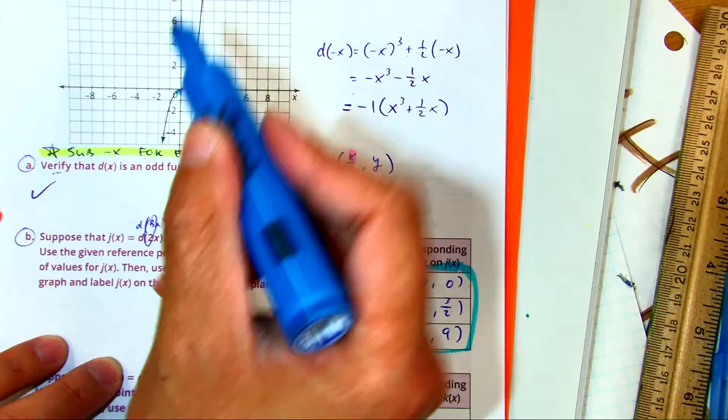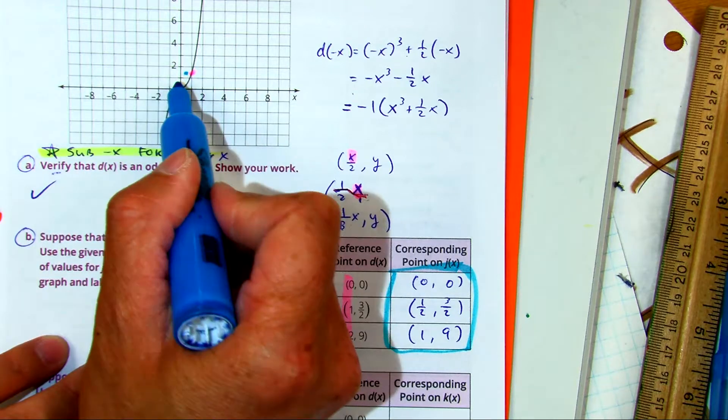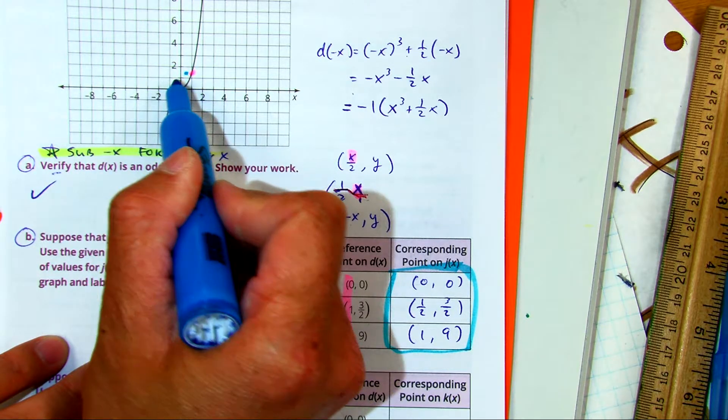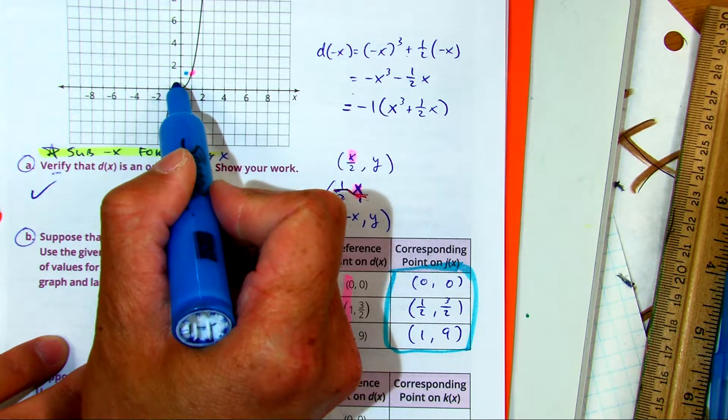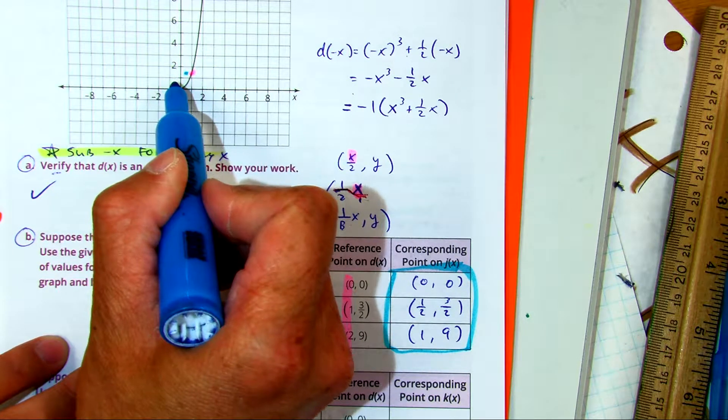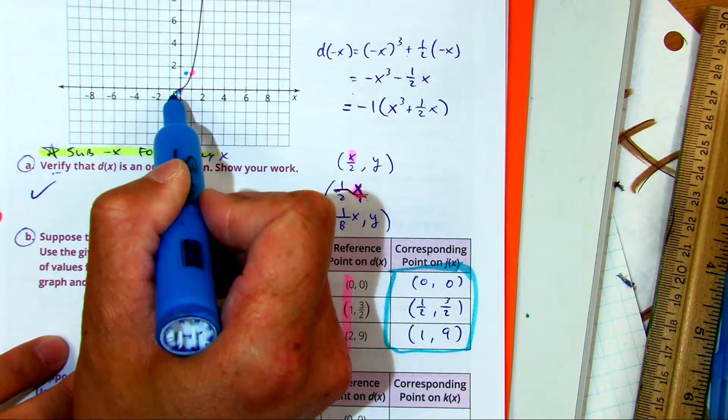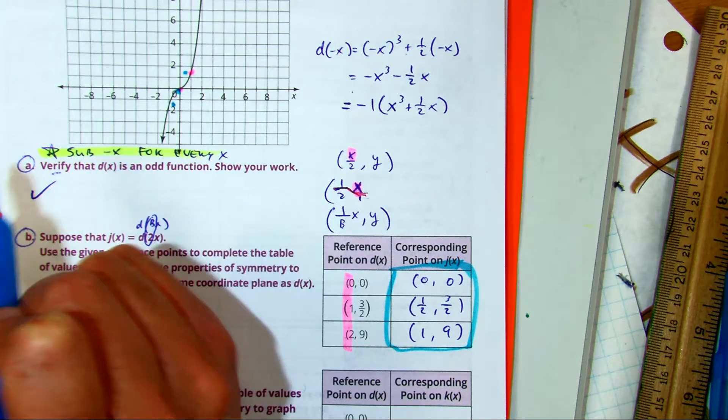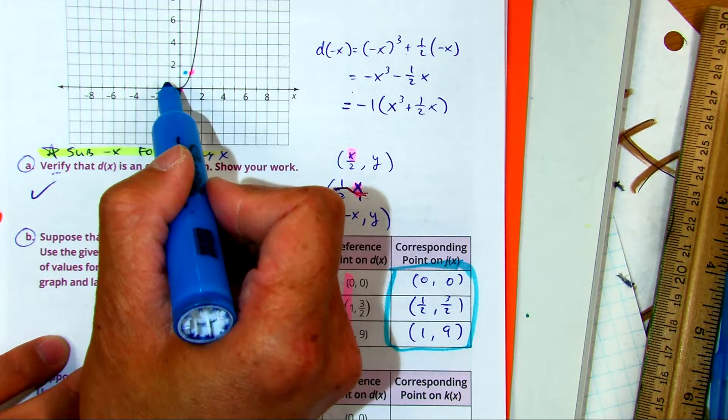And then I can do the same thing as the other one. Left 1 and a half down. Right 1 and a half. Down 1.5. And then left 1, down 9. Something like this.